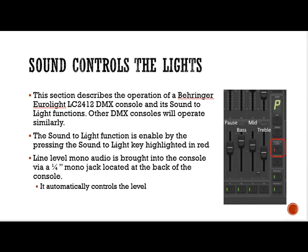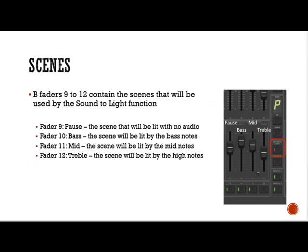Other DMX consoles will operate similarly. The sound-to-light function is enabled by pressing the sound-to-light key highlighted in red. Line level mono audio is brought into the console via a quarter-inch mono jack located at the back of the console, and the console will automatically control the level.